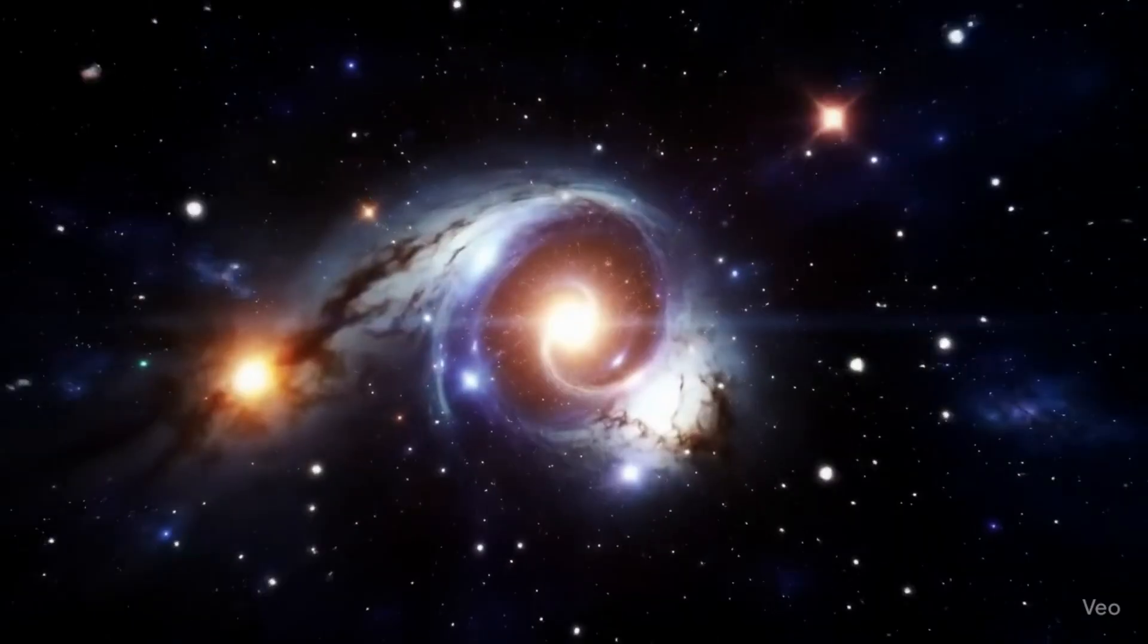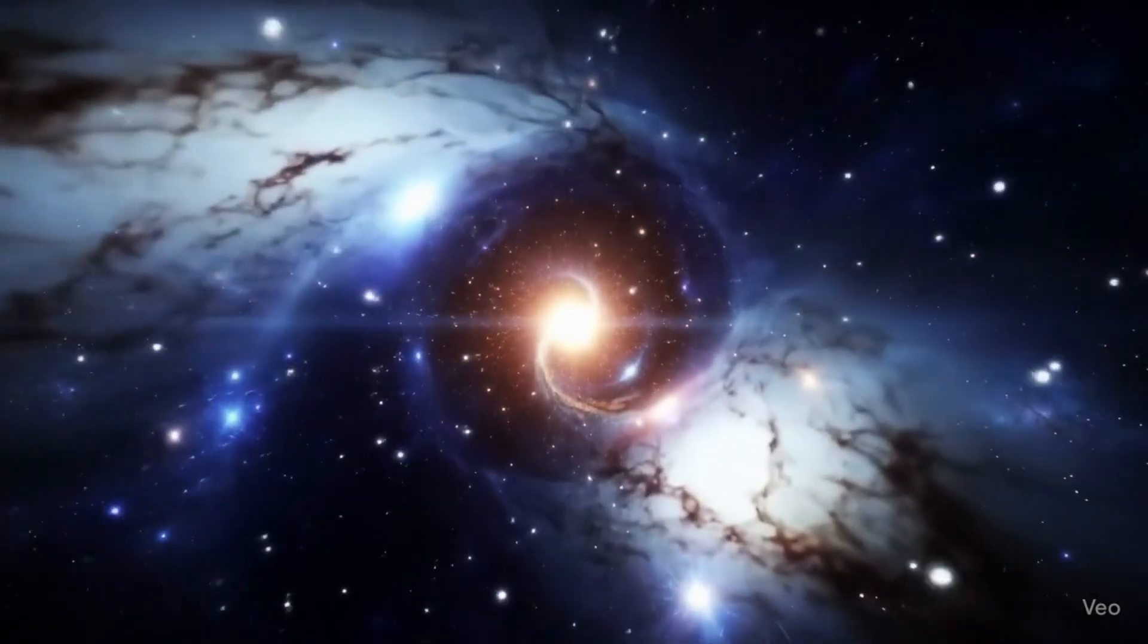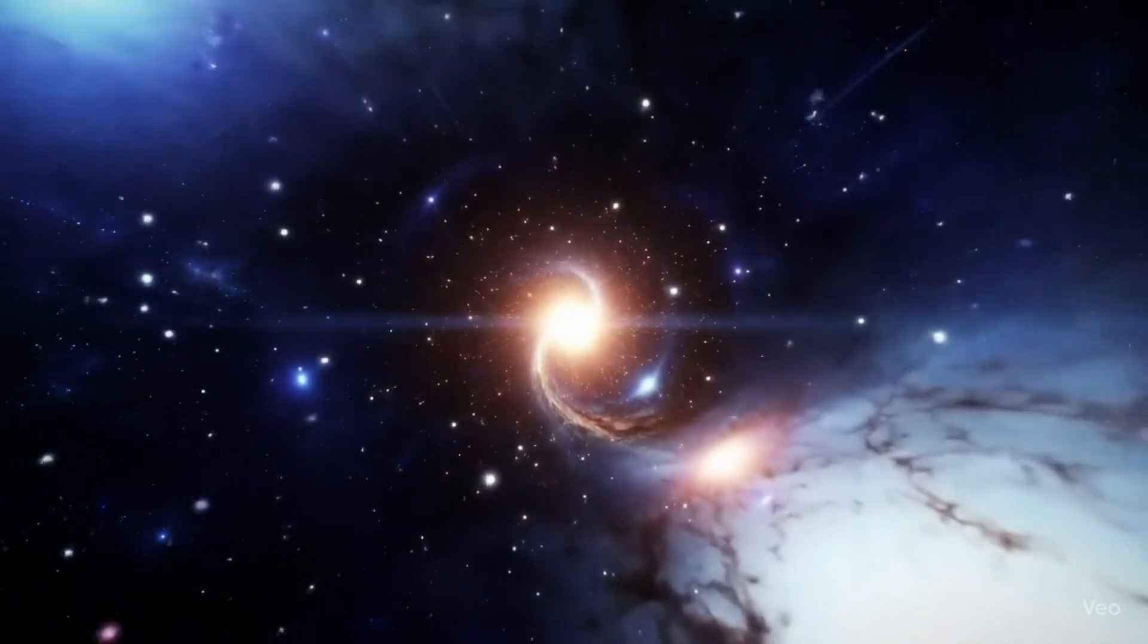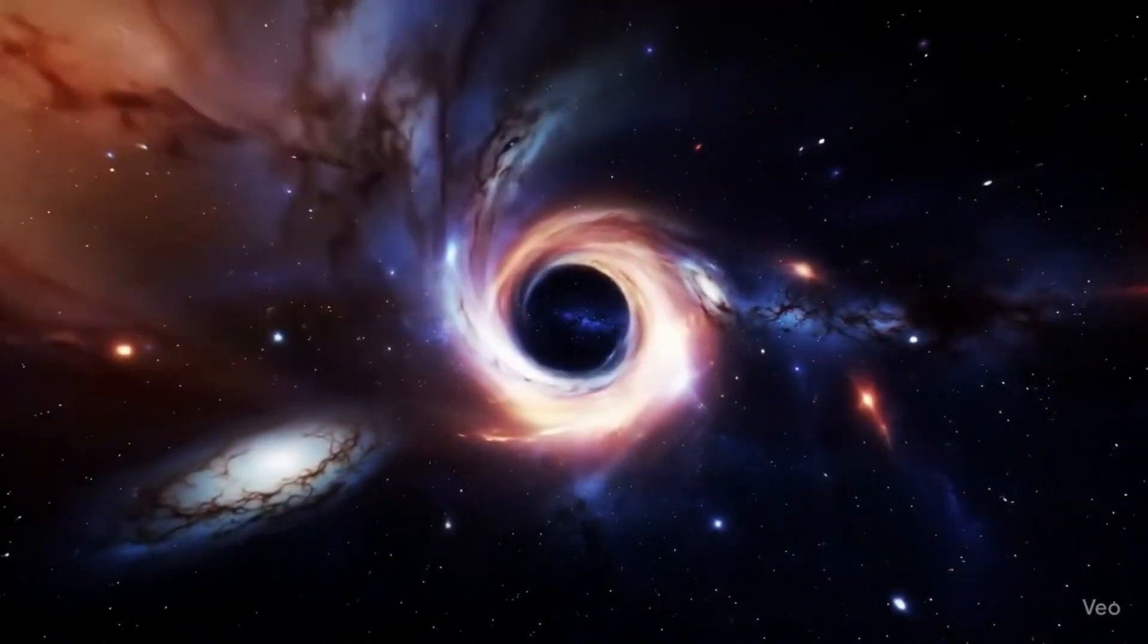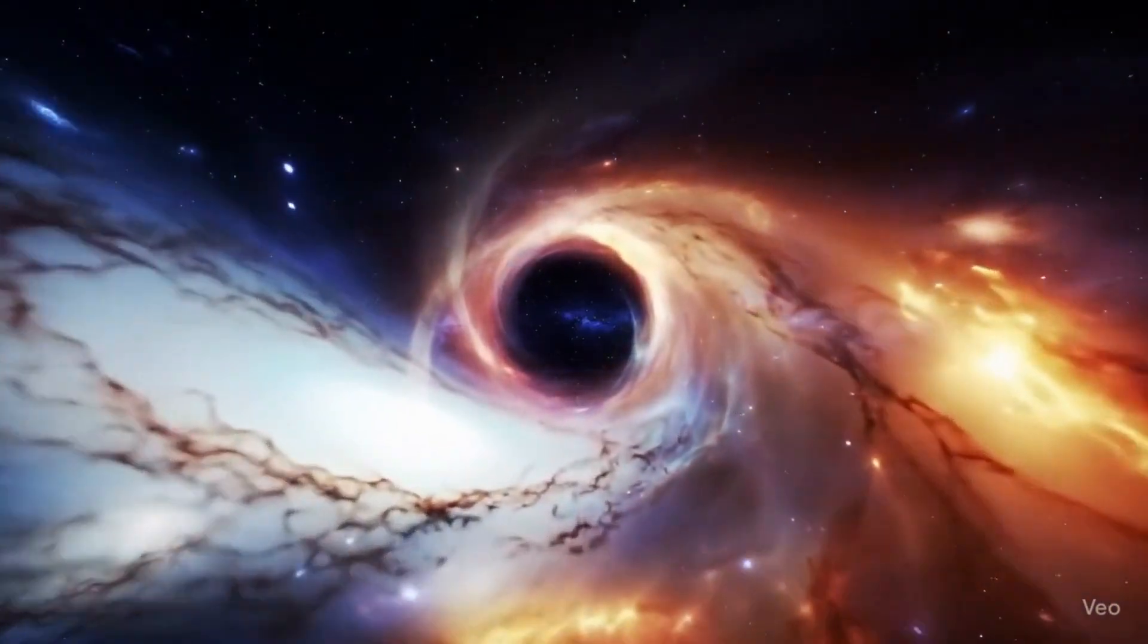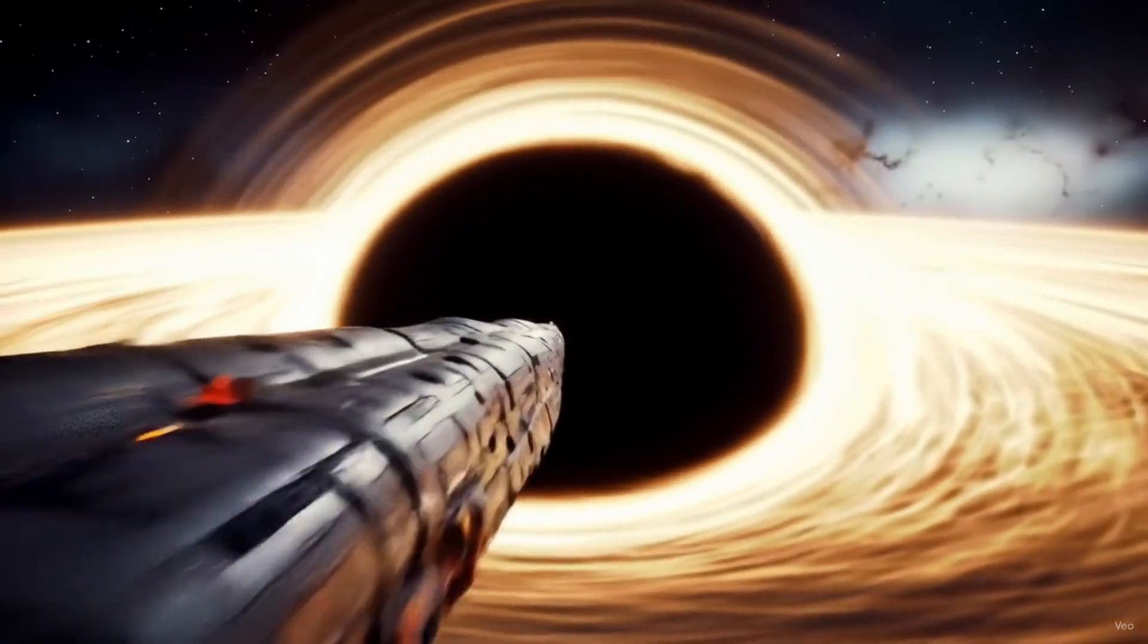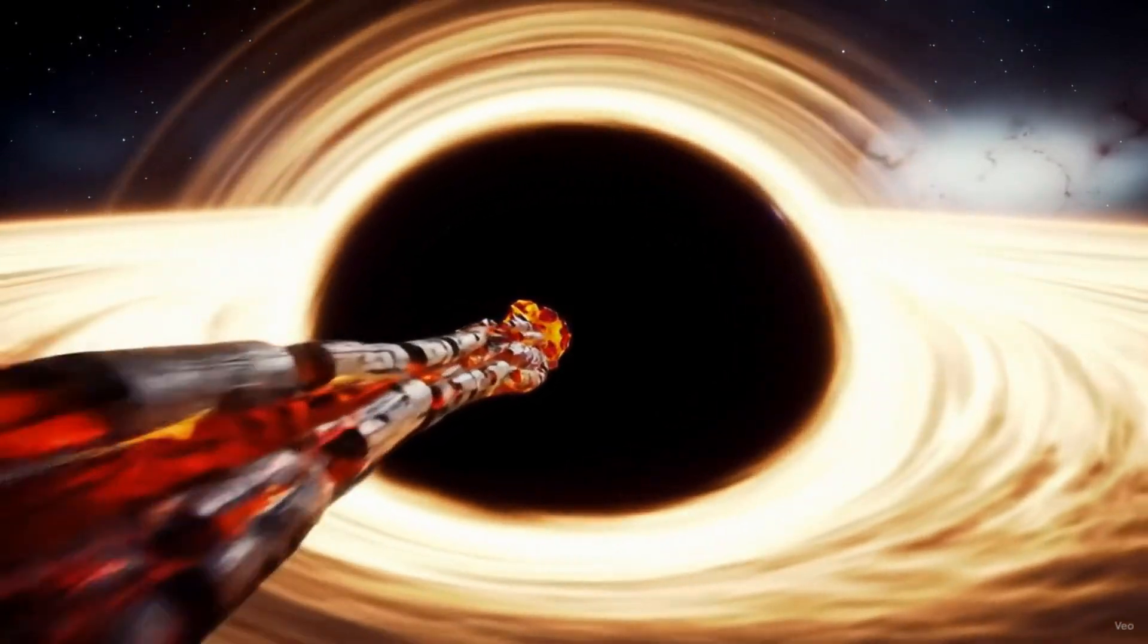The most famous is the Schwarzschild wormhole. A Schwarzschild wormhole would theoretically connect a black hole to a white hole, a hypothetical region of space-time from which nothing can enter, only exit. The problem? This type of wormhole would be unstable and extremely fleeting. It would collapse almost instantaneously, making travel impossible.